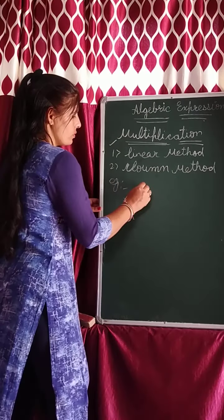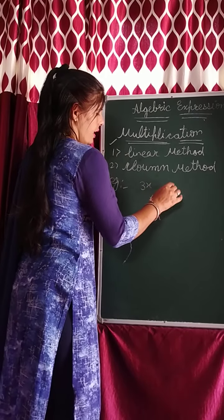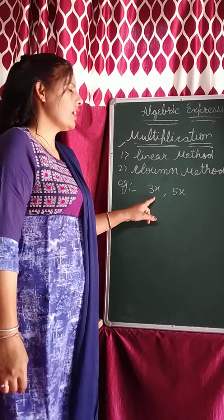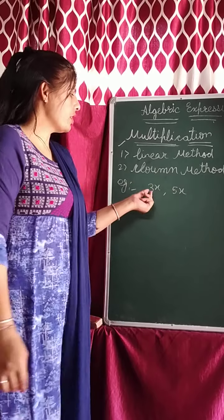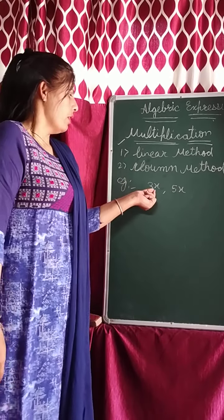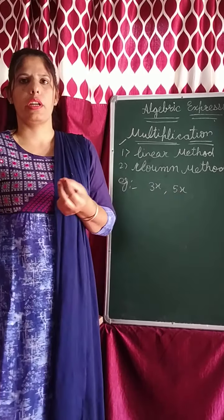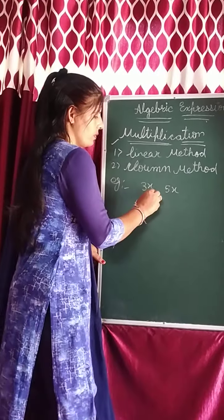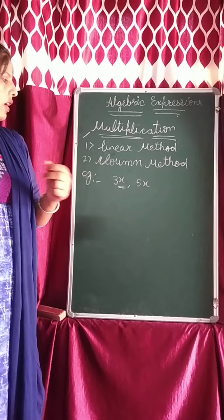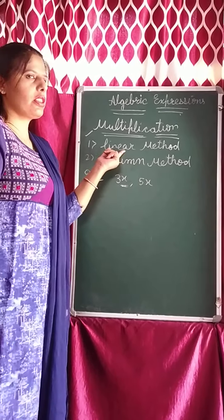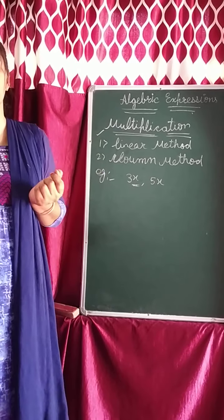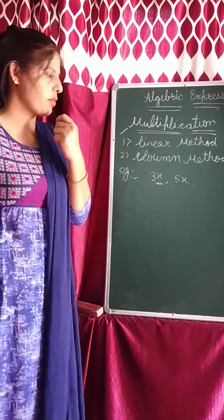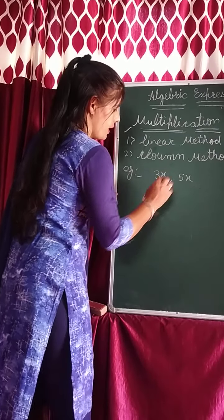Example: let's take any expression — we will multiply 3x and 5x. In your exam, the statement can be anything, like: multiply 3x and 5x. There can be 1 variable or 2 variables. First we will use the linear method with one variable — one variable means only a single x. Linear method means we solve it in a single line. For example, 3x and 5x.